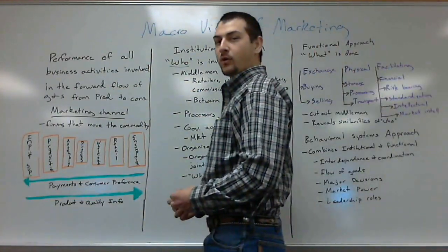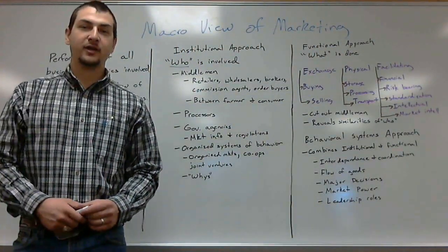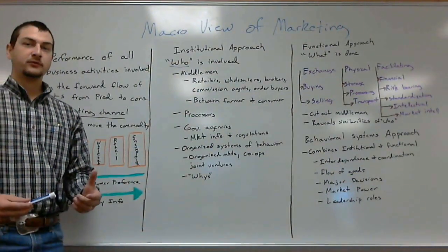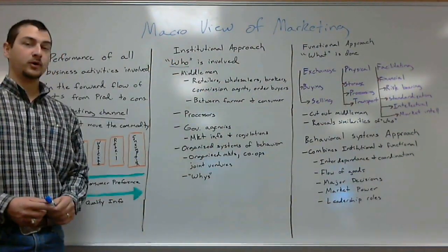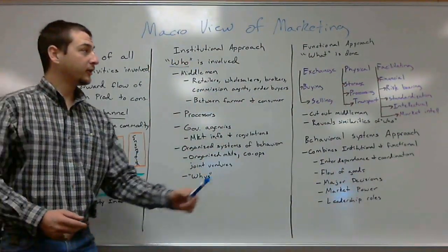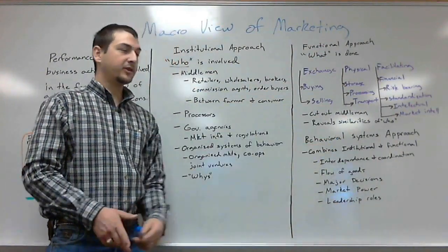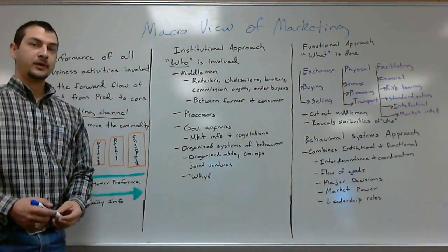Whenever we talk about the macro view of marketing, we have to look at it from three different approaches. The first one is this institutional approach, followed by the functional approach, or then the behavioral systems approach.